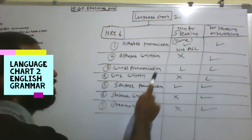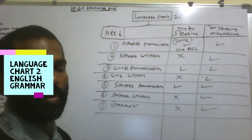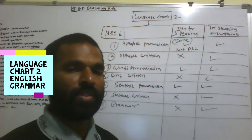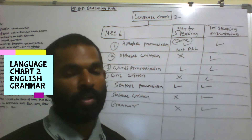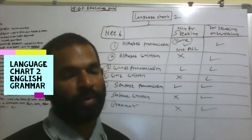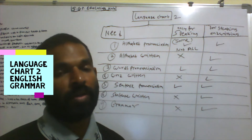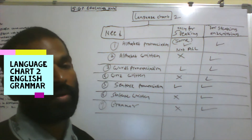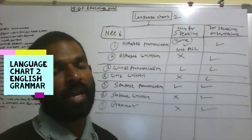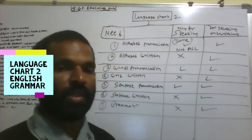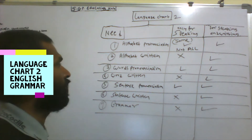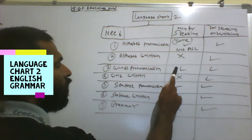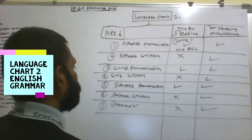The third point is word pronunciation. For speaking, how many words you know about any language determines how well you will be able to speak that language. If you have very little vocabulary about any language, then you are not able to speak fluently. Words are the building blocks of any language. For both speaking and writing, you should learn as many words as possible.